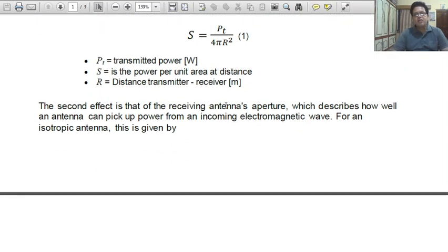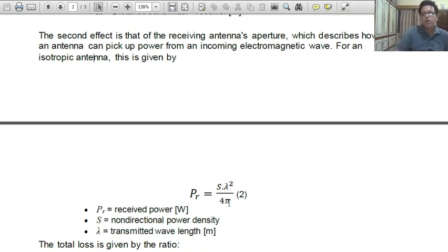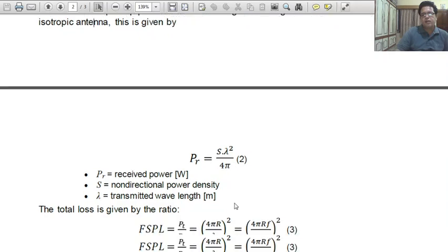The second effect is that receiving antenna's aperture, which describes how well an antenna can pick up power from an incoming electromagnetic wave. For an isotropic antenna, this is given by Pr equal to S lambda square upon 4 pi. Here, Pr is received power. S is non-directional power density. And lambda is transmitted wavelength. So, Pr equal to S lambda square upon 4 pi.